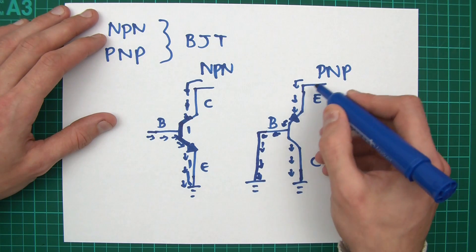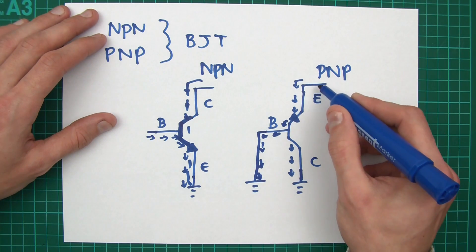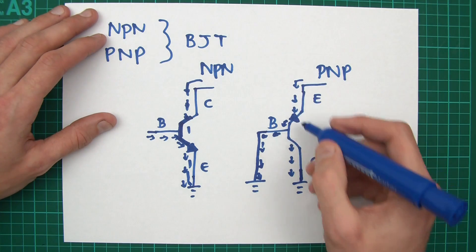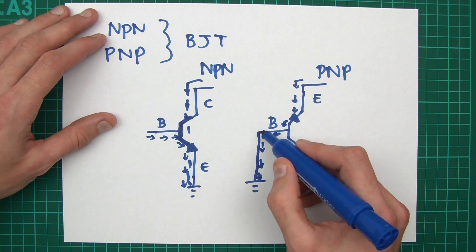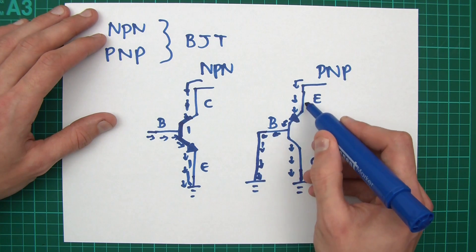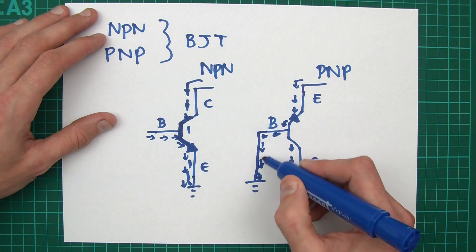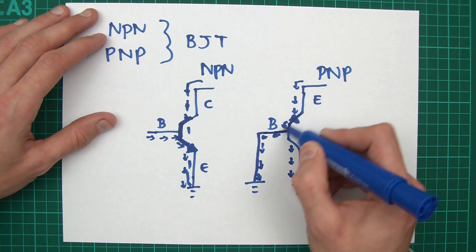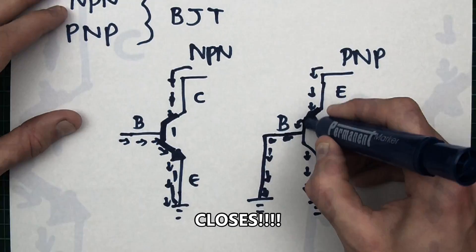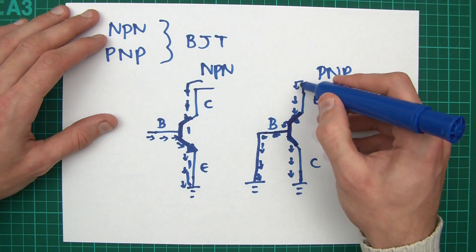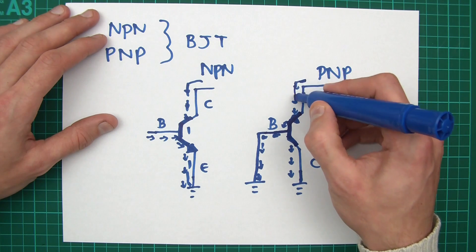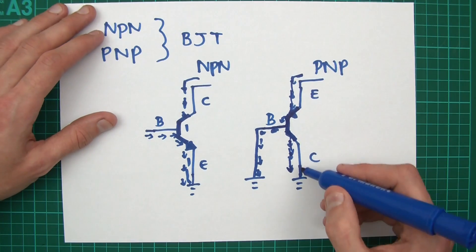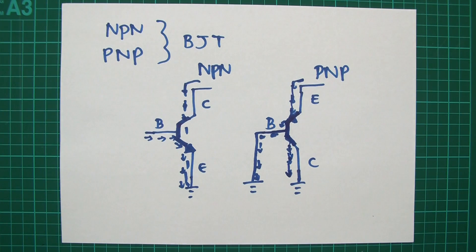Let's go over that again. We've got a main circuit and we want current to flow from the emitter down to the collector, but by default it can't. As soon as you connect the base to a voltage lower than the emitter — let's say ground — the base path closes, and therefore the main path opens up, allowing the primary circuit to send its current straight through. That's how the PNP transistor works.